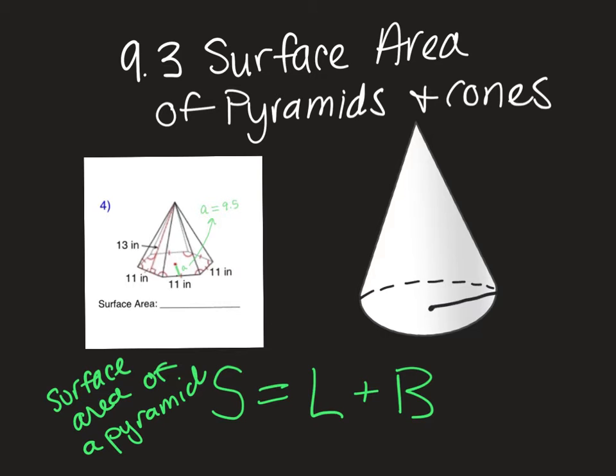Okay, now we do have to do a slightly different thing to find the lateral surface area this time. Very slight difference. All right, anybody still writing from this slide? Basically, you just need the S equals L plus B. All right, are we good?